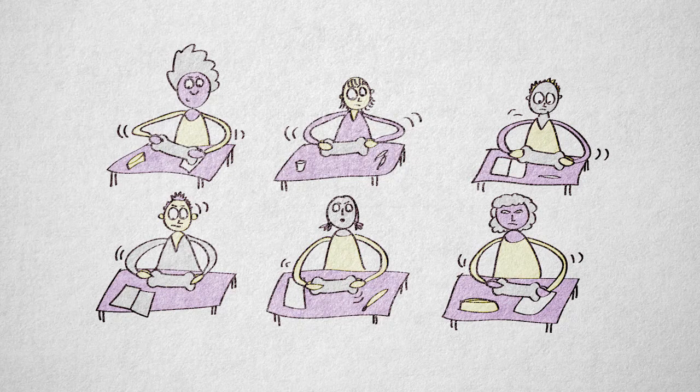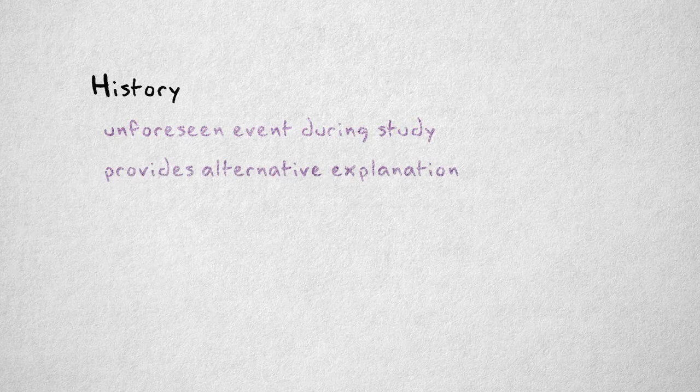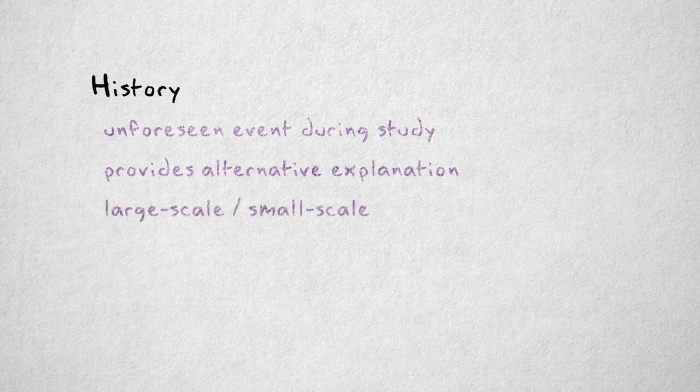Let's move on to a threat referred to as history. A history effect is an unforeseen event that happens during the study that provides an alternative explanation. This could be a large-scale event, or something small that goes wrong during data collection.